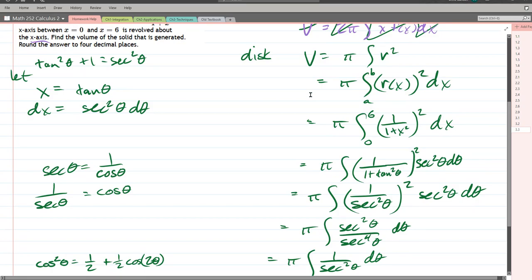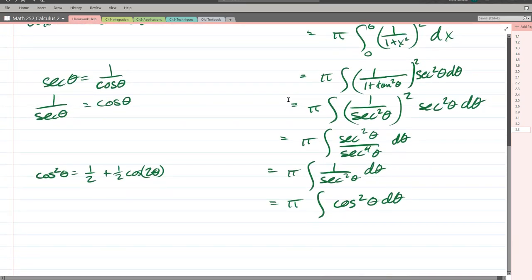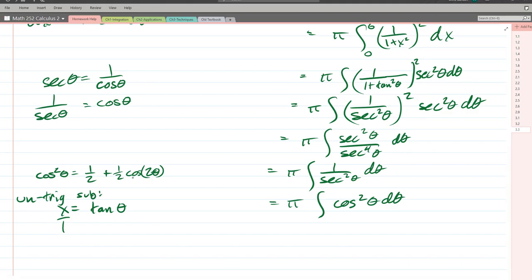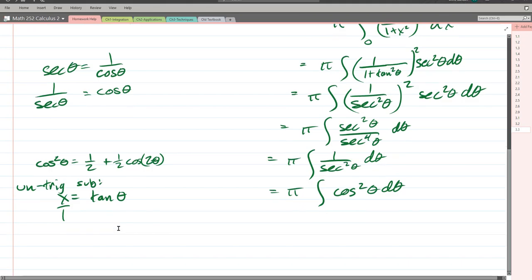This happens any time you do a trig sub. Trig subs are very versatile, but the price you have to pay is going back at the end. So to untrig sub, we're going to have, I think we'll have a sign here. And x over one is, I just put it over one because we're going to use Sokotoa. So we have theta, the opposite is x, adjacent is one. Now we're going to get the hypotenuse is going to be square root x squared plus one.